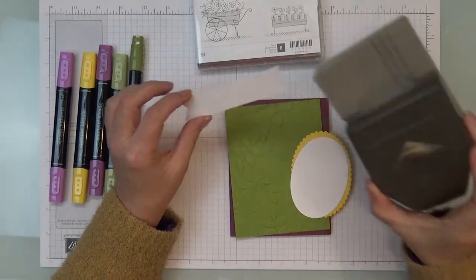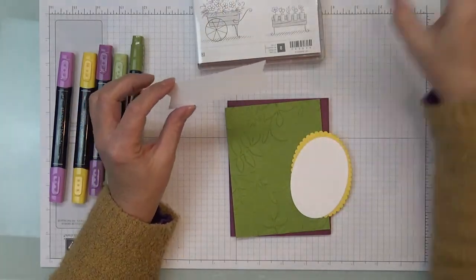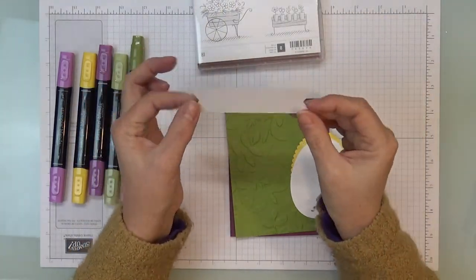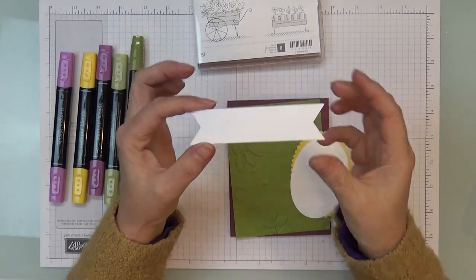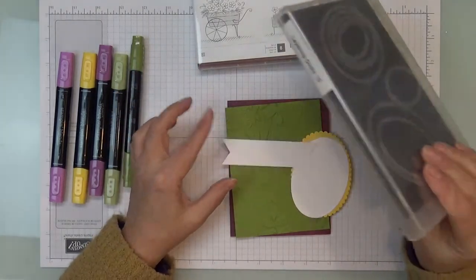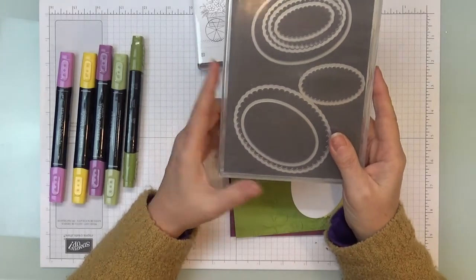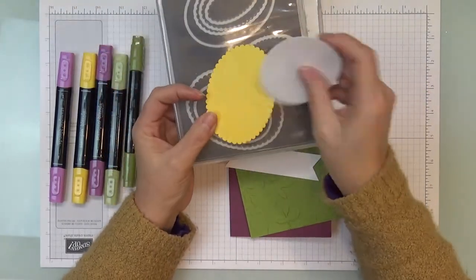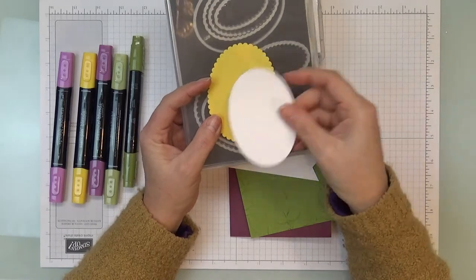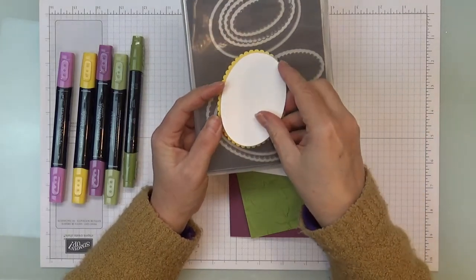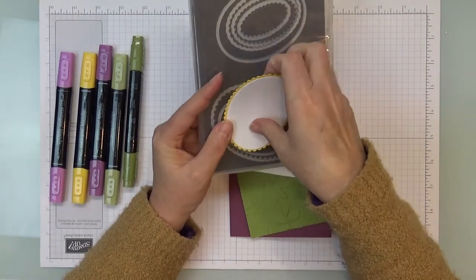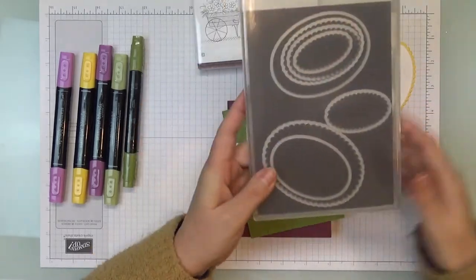This is about an inch thick and I used the Triple Banner Punch to just make little flags on each end for the sentiment. And then I used the Layering Ovals Framelits to cut out a piece of Daffodil Delight. I used the Scallop for that one and then just the regular oval on a piece of Whisper White and that's what we're going to stamp our image on.